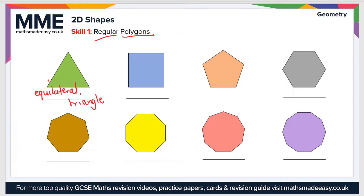A rectangle is a four-sided polygon, but a regular rectangle is known as a square — so a square is actually a type of rectangle. Moving on, a five-sided shape is a pentagon, so this is a regular pentagon as all sides are the same length. A six-sided shape is known as a hexagon, so that's a regular hexagon.